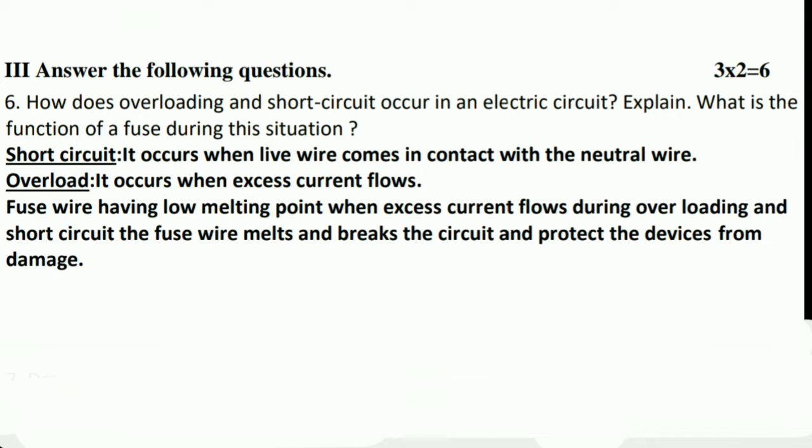Next two-mark question: how do overloading and short circuit occur in an electric circuit, and what is the function of a fuse? Short circuit occurs when the live wire comes in contact with the neutral wire. Overloading occurs when excess current flows. The fuse wire has a low melting point; when excess current flows during overloading or short circuit, the fuse wire melts, breaks the circuit, and protects the device from damage.